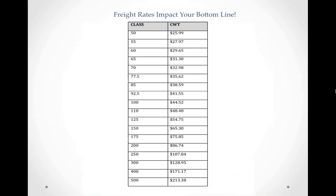Looking at the next slide, you can see the variance from class to class and how it steps up from one class to the other — your lowest rate per 100 weight at class 50 and your highest at class 500. It's really important that you get the classification correct when filling out your bill of lading if you want to anticipate exactly what your freight charges will be.